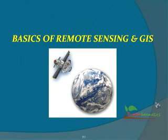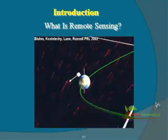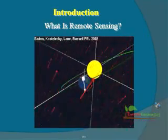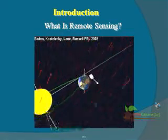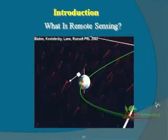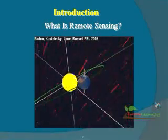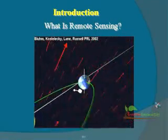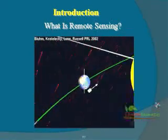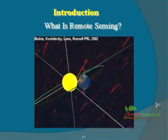Basics of Remote Sensing and GIS. Remote sensing is the process of collecting data about objects or landscape features without coming into direct physical contact with them. It can be anything from visual assessment of one's surrounding area, using a handheld camera, aerial photography, or satellite imagery.